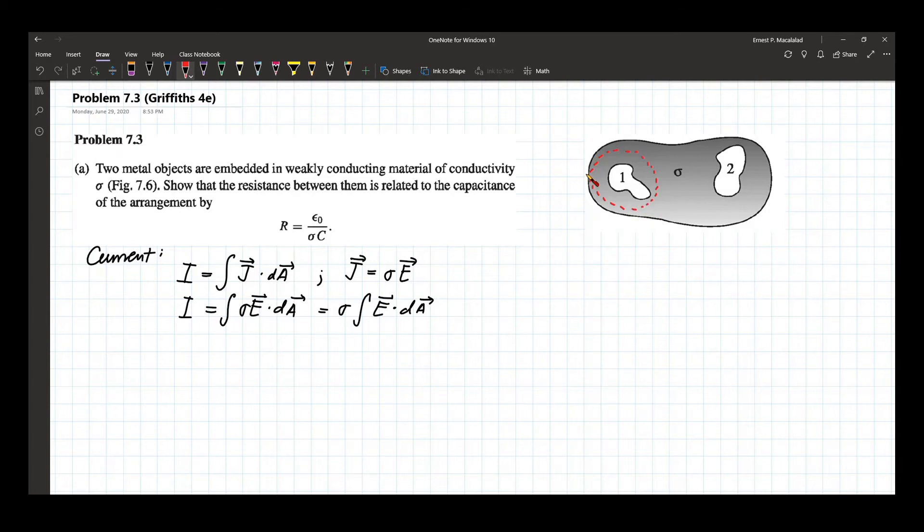But by Gauss' law, this integral, if this is a closed integral, is just equal to the enclosed charge in the first metal divided by epsilon naught. So in short, this is now equal to sigma Q enclosed over epsilon naught.